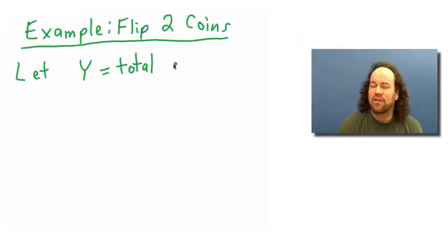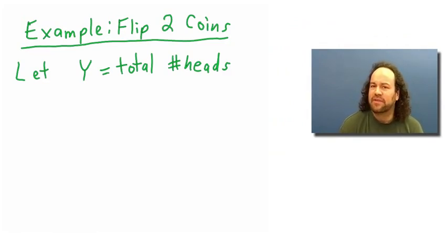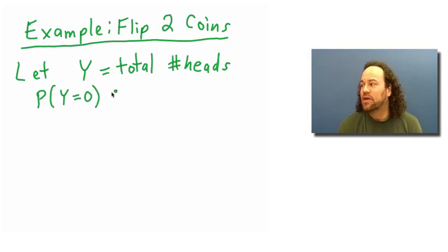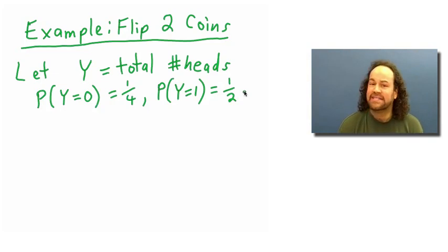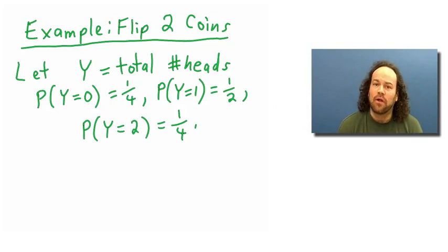For example, remember last time we had some experiments where we flipped an ordinary coin and counted the number of heads. If we flip the coin twice and let y be the number of heads, then the probability that y equals 0 is a quarter, the probability that y equals 1 is a half, and the probability that y equals 2 is a quarter. These numbers add up to 1 and give us all the probabilities for the random variable y.